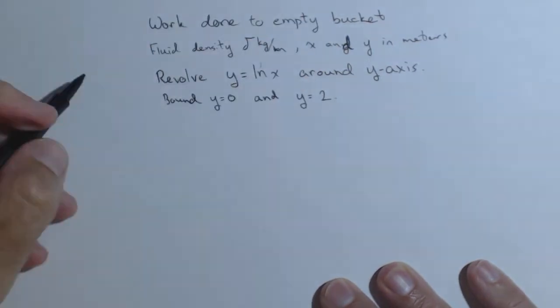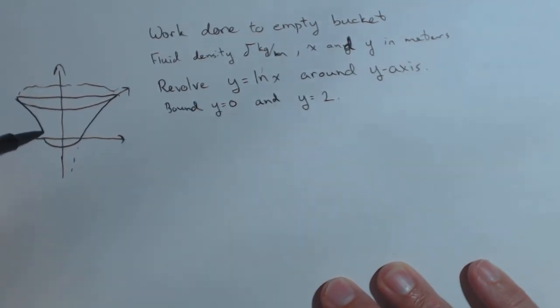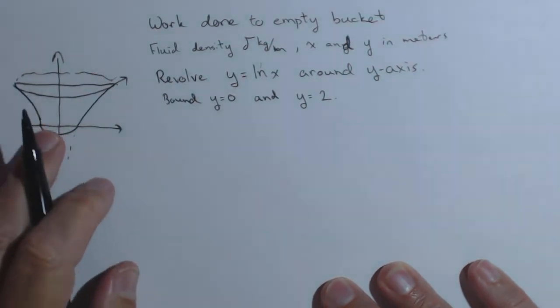That'll make an interesting looking bucket. We have our x, y-axis here. The graph of ln(x) looks like this, and we're not starting until 0. If we revolve that around the x-axis, here's our line at y=2. We can start to see the shape of our bucket. It's kind of a cool looking bucket.